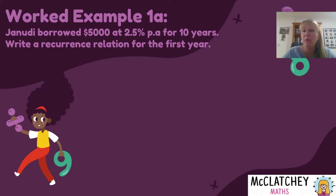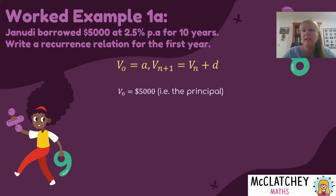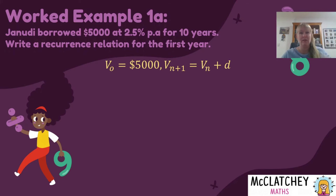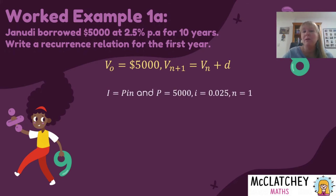Genuity is borrowing five thousand dollars at two and a half percent per annum for 10 years. Write a recurrence relation for just the first year. So we start with our basic form: V0 equals A, and Vn plus one equals Vn plus D. Let's substitute some information. The value at time zero — when she's borrowed the money — is five thousand dollars. That's our principal, so we can put that straight into the recurrence relation. Now we need to work out the common difference, so we're going to use the formula I equals PIN, because that's the amount of interest that gets added every year.